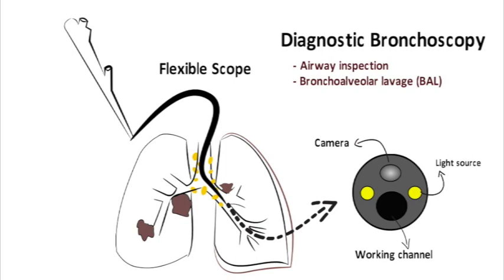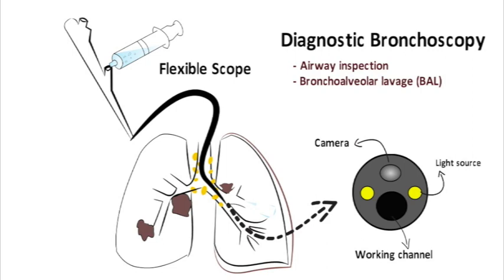BAL is performed by wedging or passing the flexible scope as far as possible into a small airway segment, typically corresponding to an area of abnormality on imaging, such as an infiltrate. A small amount of fluid is then pushed into the pulmonary segment, where it's trapped in front of the scope. The fluid is aspirated back out, now containing cells from the area, and sent to the lab for analysis. BAL is most useful for diagnosing pulmonary infections, but can also be used to diagnose inflammatory disorders and malignancy.